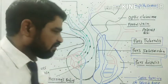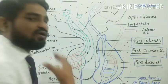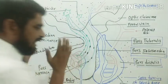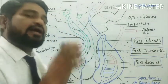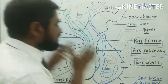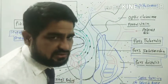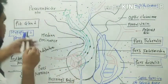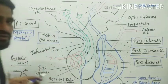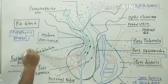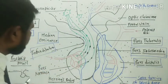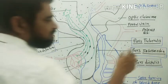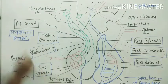The posterior lobe of the pituitary is also called neurohypophysis. The anterior pituitary is called adenohypophysis because of its glandular epithelium, while the posterior is called neurohypophysis because of its neural structure. The anterior pituitary secretes six hormones; the posterior pituitary does not produce hormones — it stores and releases them. The posterior lobe consists of three parts: the median eminence, the infundibulum (the stalk-like portion), and pars nervosa.